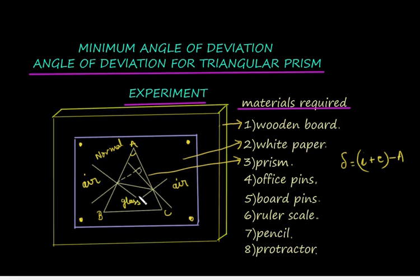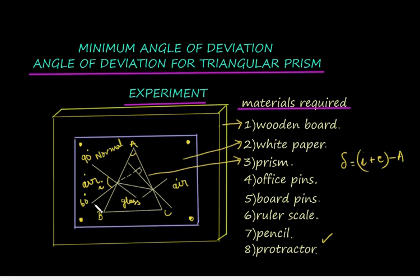After drawing the normal using the protractor, an angle is marked. The protractor can be used for drawing the normal by keeping it at the edge — 90 degrees can be marked using the ruler, scale, and pencil. The normal can be drawn and a certain angle of incidence, say 60 degrees, can be marked here, and a line is drawn accordingly.